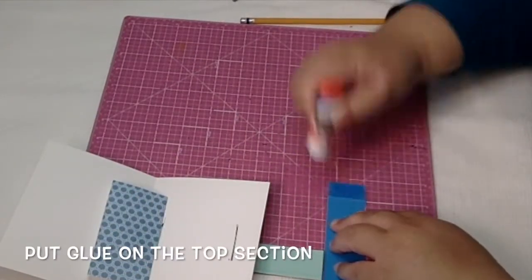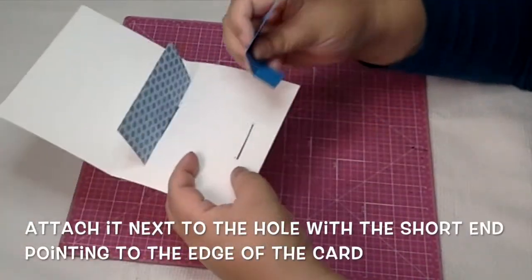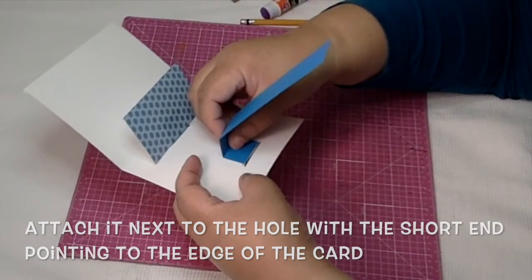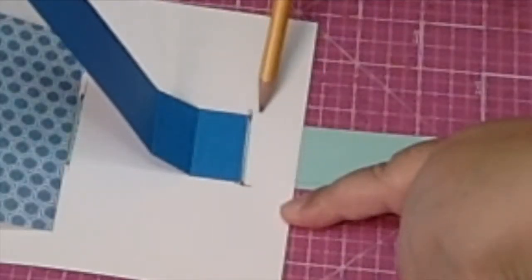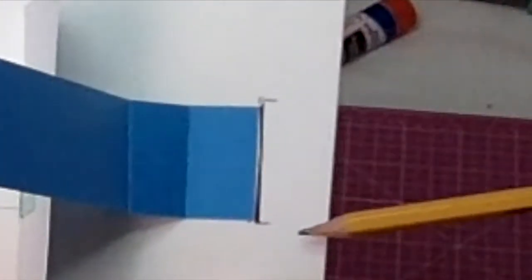Okay, just like the other one, you put glue on the top end, the top half of that tab like this, and then you attach it next to the hole with the short end of the pull tab facing the hole toward the outside of the card.